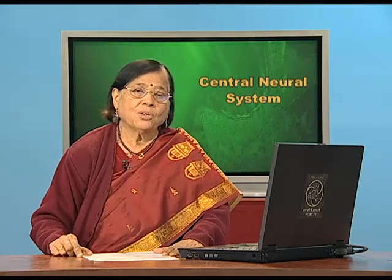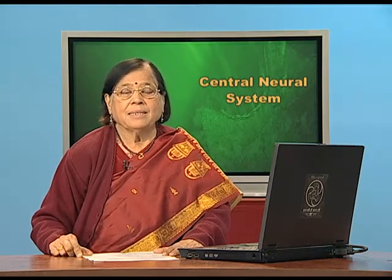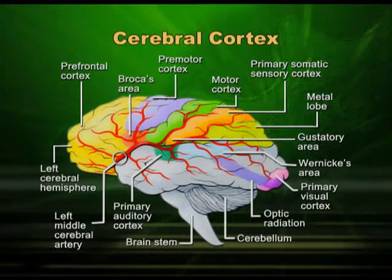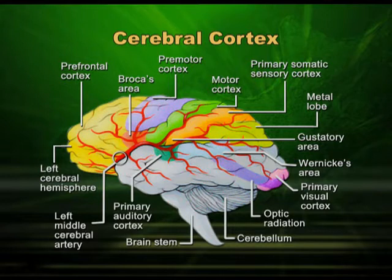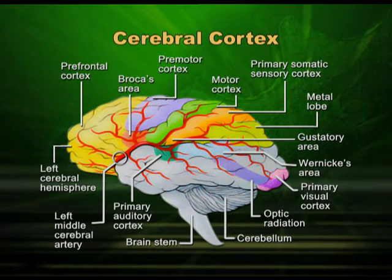The axons of all these neurons are myelinated — they have a myelin sheath and are towards the inner side of the cerebral cortex. So the outer side looks grey, and if you go towards the centre of the brain, you will find it white — white matter. In the brain, the outer part is grey matter and the central part is white matter, whereas in the spinal cord, it is just the reverse.